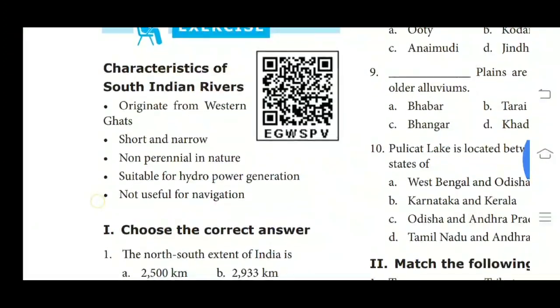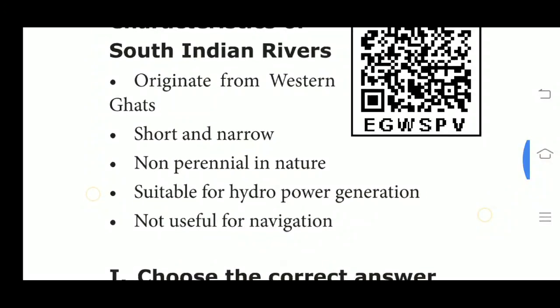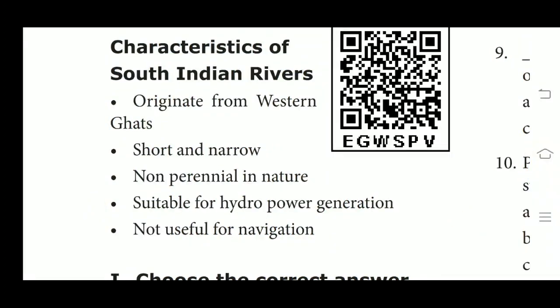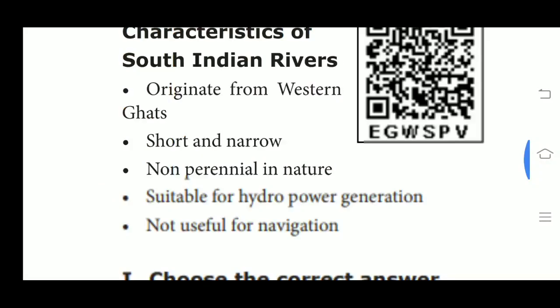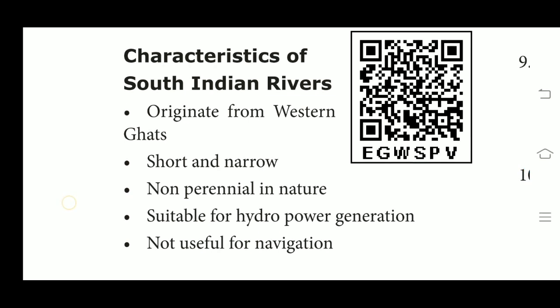The characteristics of South Indian rivers: First, they originate from the Western Ghats — most Peninsular rivers originate in the Western Ghats and flow toward the Bay of Bengal. Second, they are short and narrow — the Peninsular rivers flow over the plateau and coastal plains. Third, they are non-perennial in nature — a large number of Peninsular rivers are seasonal as the flow is dependent on rainfall. During the dry season, even large rivers have reduced flow of water in their channels, so they are called seasonal or non-perennial rivers.